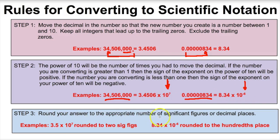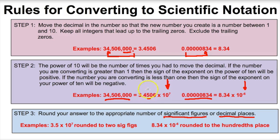Step three: round your answer to the appropriate number of significant figures — we'll learn more about sig figs in a different video. For example, rounding to two significant figures: our first and second sig figs give us 3.4, and since the next digit is 5, we round up — five or more raise the score, four or less let it rest — giving 3.5 times 10 to the 7th. For the hundredths place, 8.34 times 10 to the negative 6th.